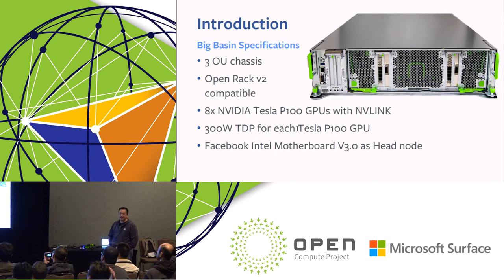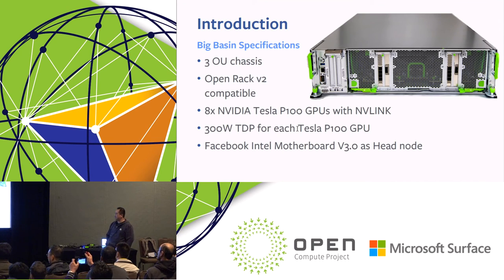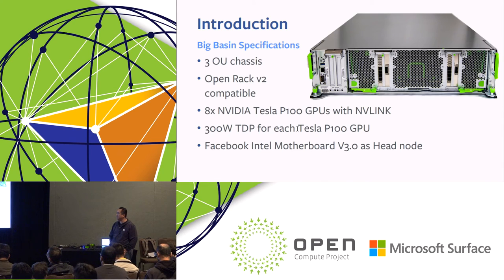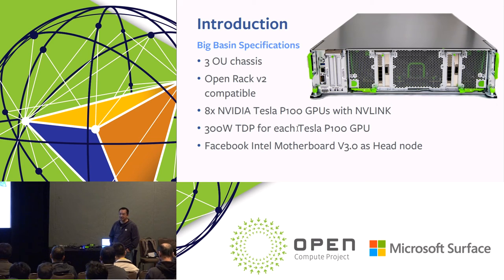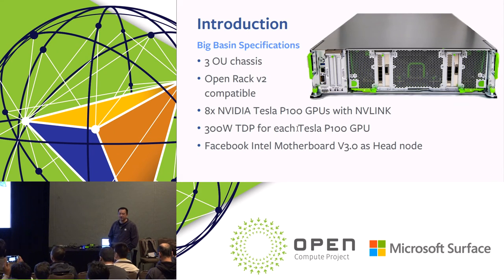Big Basin is a 3U chassis. It is Open Rack V2 compatible. It has eight GPUs, each consuming 300 watts TDP. Big Basin is built like a JBOC, similar to Lightning. It needs a head node, and we are using Leopard for that.